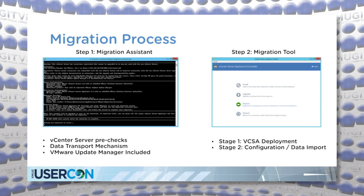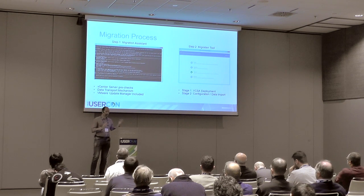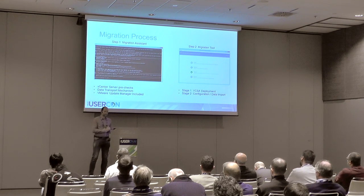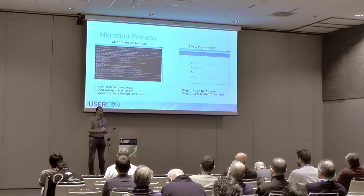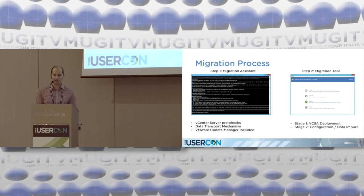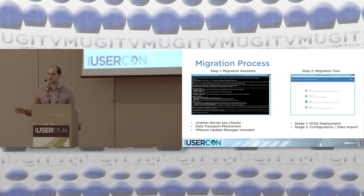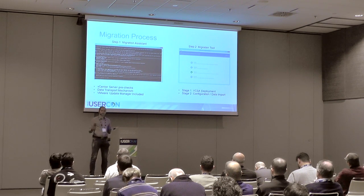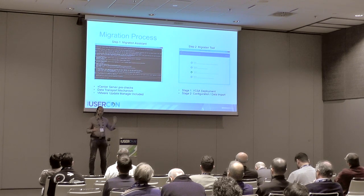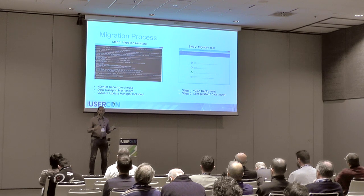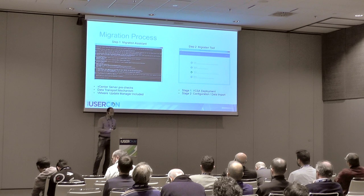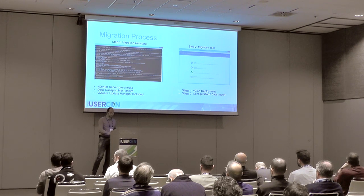The migration process from Windows vCenter Server to appliance is very similar to upgrading from one appliance to another. The difference is that in Windows there is no built-in data transport mechanism. This is why VMware provides a product named Migration Assistant, which needs to be downloaded and started before the migration. You can run the Migration Assistant ahead of the downtime window to make sure the Windows vCenter Server is in position to be upgraded.